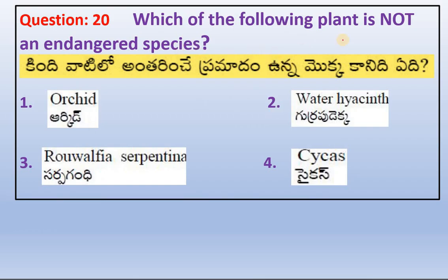Which of the following plants is not an endangered species? The correct answer is water hyacinth.